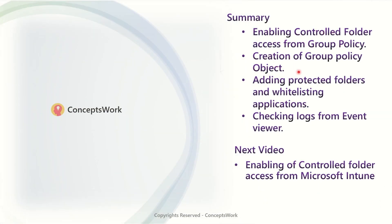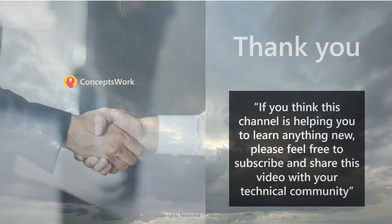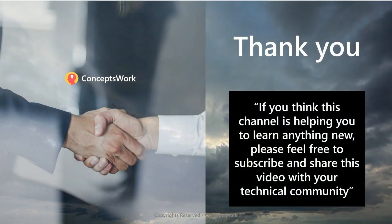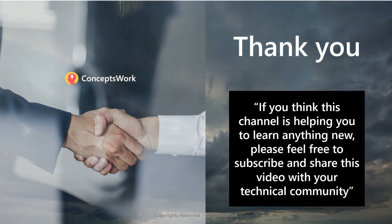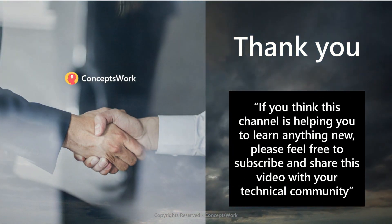To summarize, we've discussed everything you need to know for group policy object configuration — from adding protected folders to whitelisting applications and checking logs in Event Viewer. In the next video we'll see how to enable CFA from Intune. Thank you so much, thanks for your time, have a great day ahead. Bye bye.